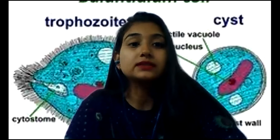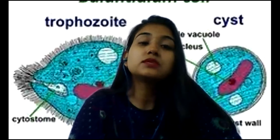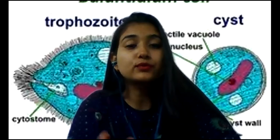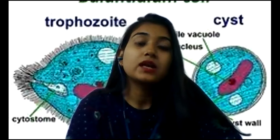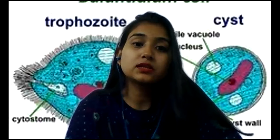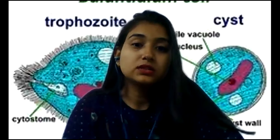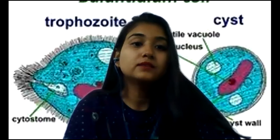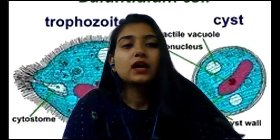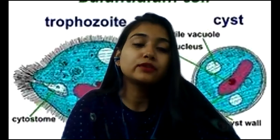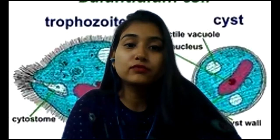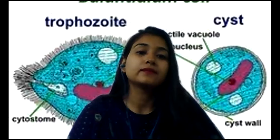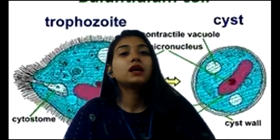Epidemiology: Balantidium coli is distributed worldwide, especially in tropical and subtropical countries where there is increased pig-to-human contact. Highest prevalence of 20% has been reported in mountain districts of West Iran and Indonesia. Human outbreaks have been reported from Pacific Islands and India in 1973.